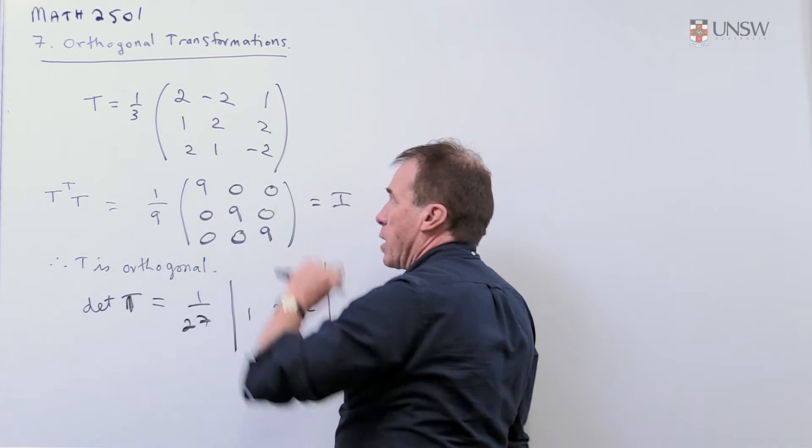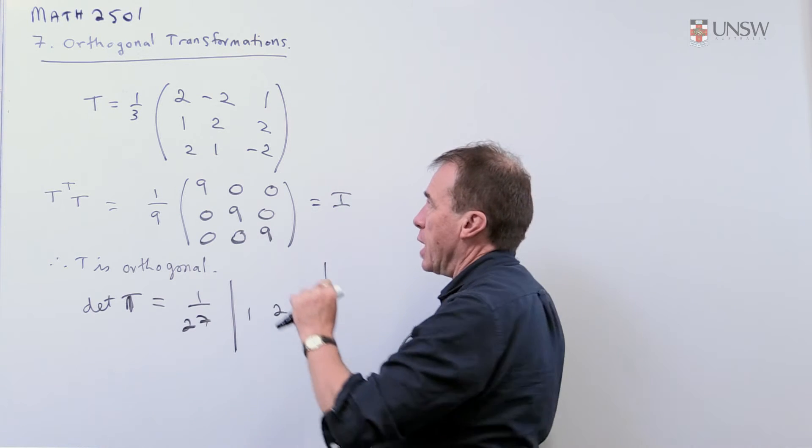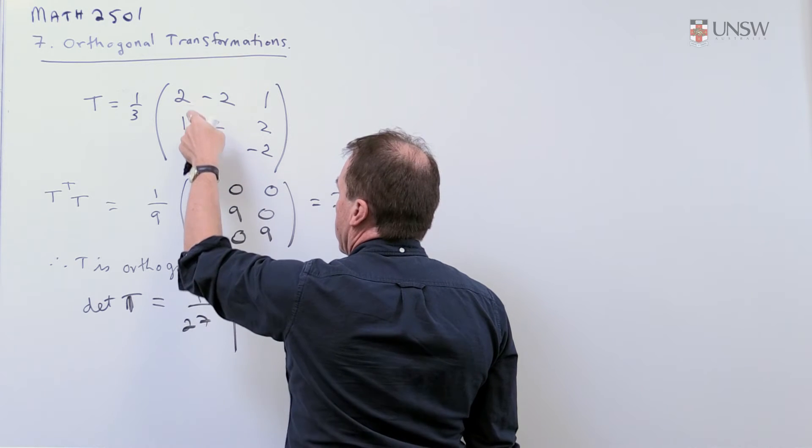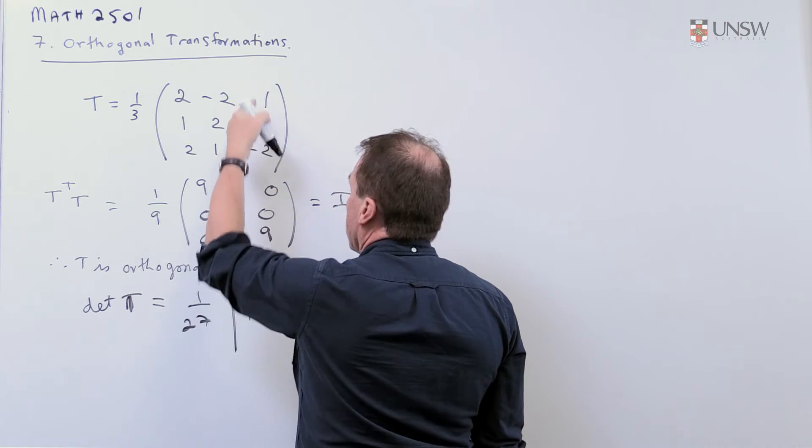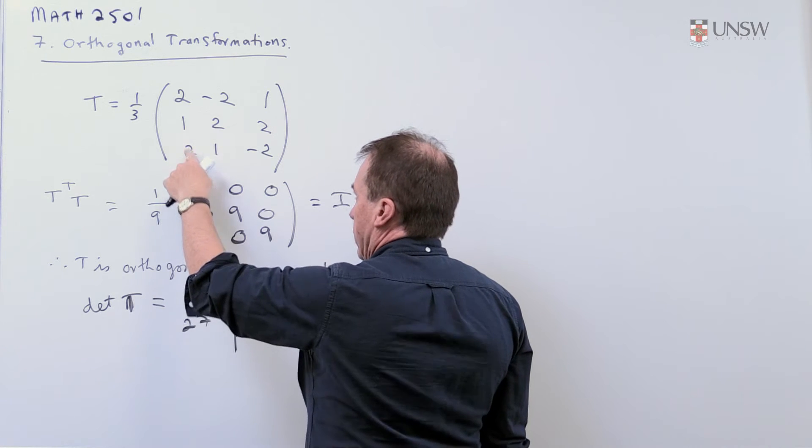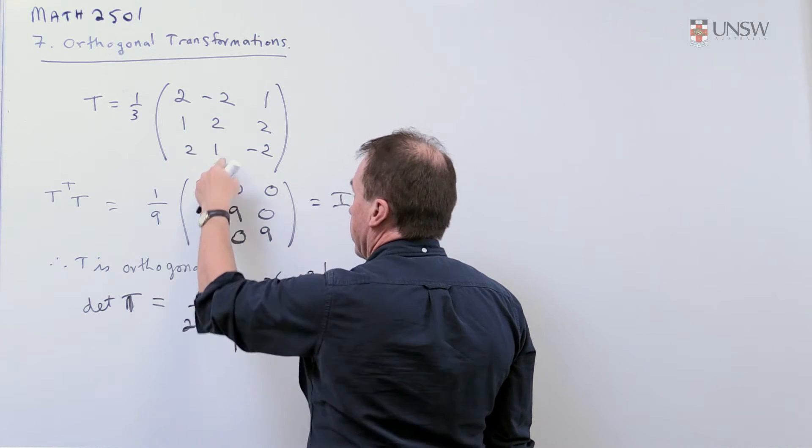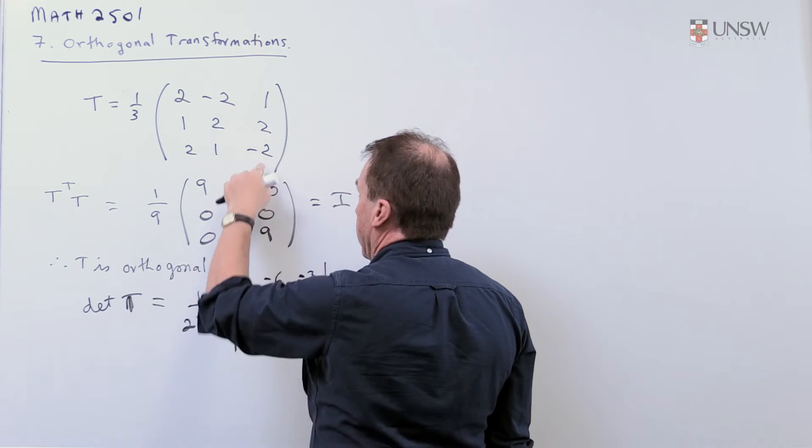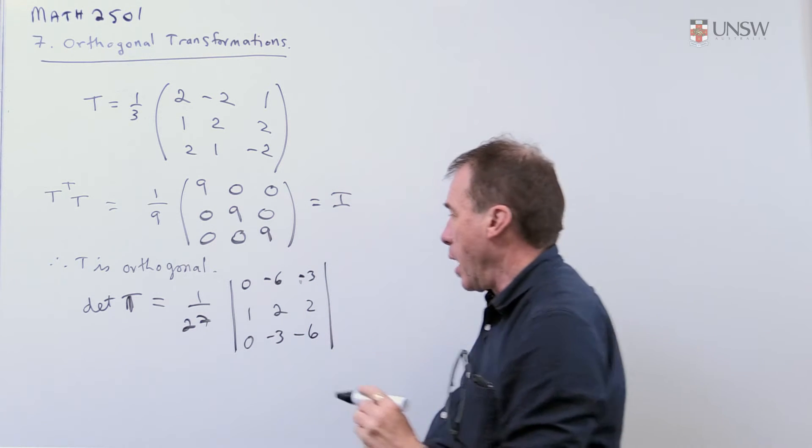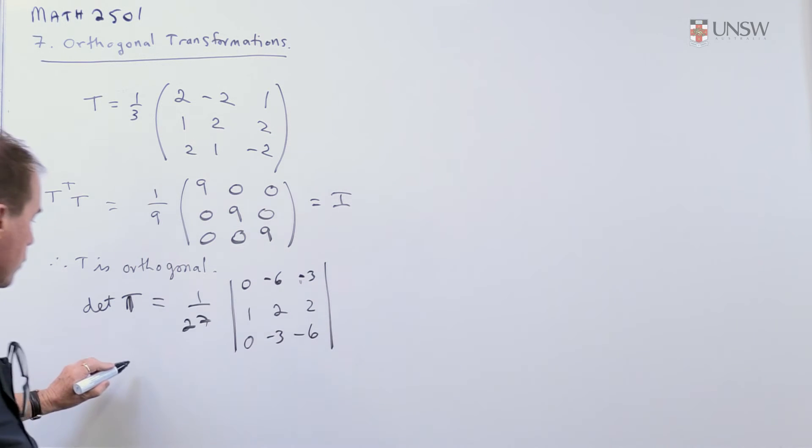And I'm going to leave the middle row alone and just do a little bit of row reduction. So I'm going to take that row minus twice that one. So this minus twice that, this minus twice that, and I'll get this one minus twice that, this minus twice that, and that minus twice that.